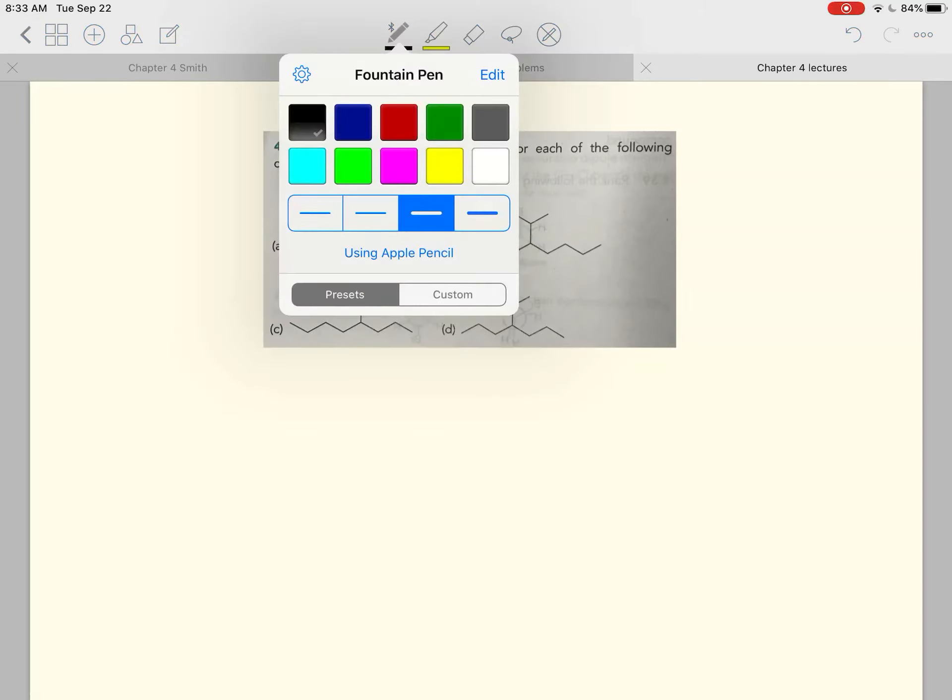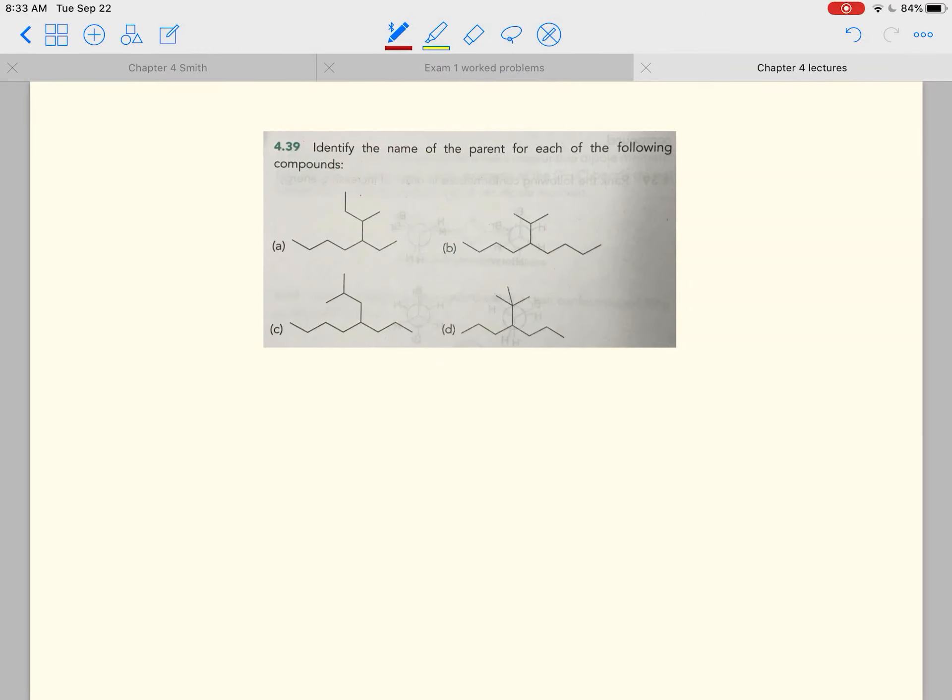Identify the name of the parent for each of the following compounds. When you work on these problems, you need to identify the longest chain, and it could zigzag through the molecule. It might not go perfectly from left to right—it could go backwards and forwards or snake around, and you just need to count.